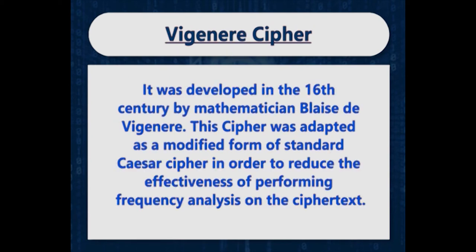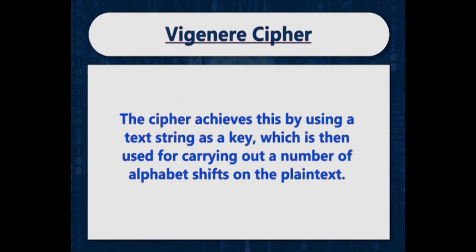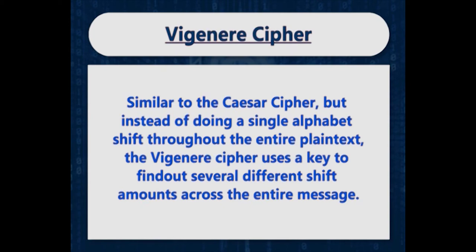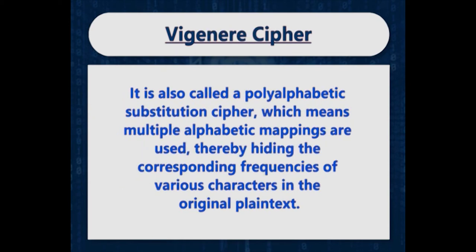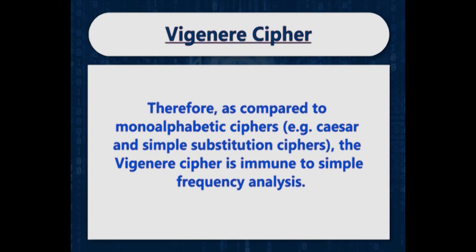The next cipher is the Vigenère cipher, developed in the 16th century by mathematician Blaise de Vigenère. It was adapted as a modified form of the standard Caesar cipher in order to reduce the effectiveness of frequency analysis on the ciphertext. The cipher uses a text string as a key, which is reused to carry out a number of alphabet shifts on the plaintext. Instead of a single alphabet shift throughout the entire plaintext, the Vigenère cipher uses a key to find several different shift amounts across the entire message. It is also called a polyalphabetic substitution cipher, making it immune to simple frequency analysis compared to monoalphabetic ciphers.